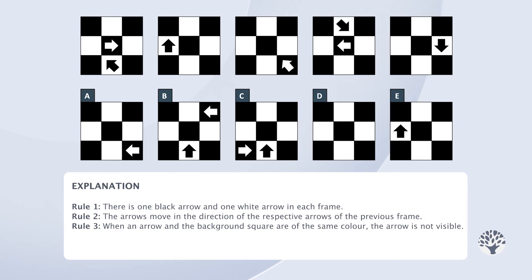Thus the black arrow won't be visible in the answer since it's pointing to the bottom right in frame five which is a black square. That rules out answer options B, C and E.